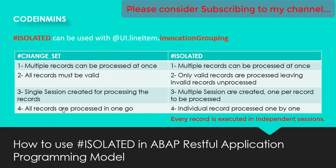The fourth point: with change set, all records are processed in one go — as we saw in the previous video, the code in the debugger executes only once and all records get processed at once. In case of isolated, individual records are processed one by one — whatever action you are triggering will be triggered multiple times, and each time a single record will be processed.